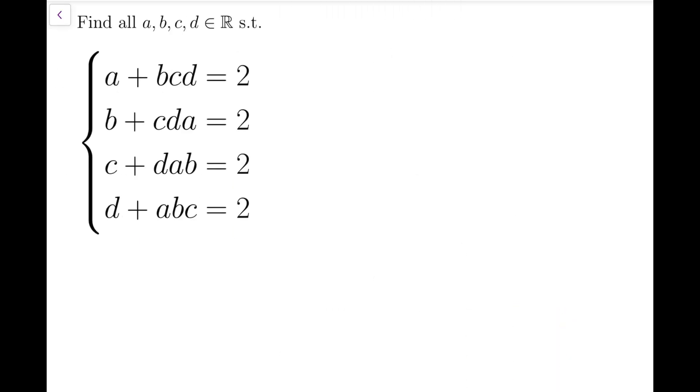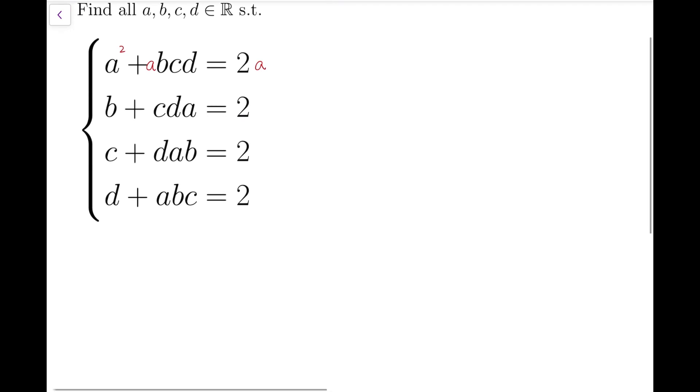The key to this problem is that there is actually some kind of symmetry between these four equations. If we multiply a on both sides of the first equation, then we'll have a squared plus abcd equals 2a. And if we multiply b on both sides of the second equation, we'll have b squared plus cdab equals 2b.